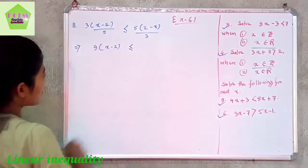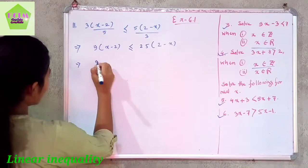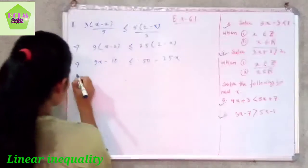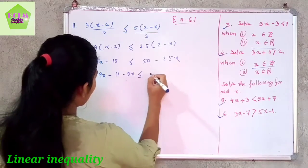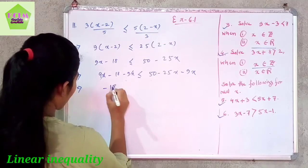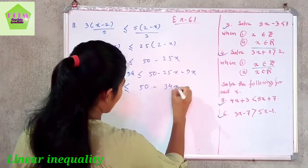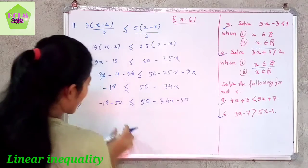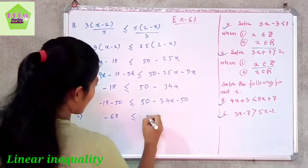After cross multiplying, 9 times (x minus 2) is less than or equal to 25 times (2 minus x). Expanding gives 9x minus 18 less than or equal to 50 minus 25x. To find x, we subtract 9x from both sides, giving minus 18 less than or equal to 50 minus 34x. Subtracting 50 from both sides gives minus 68 less than or equal to minus 34x.